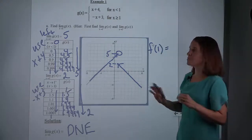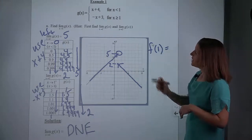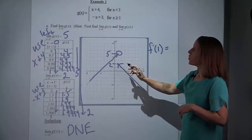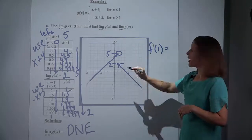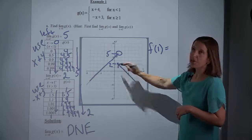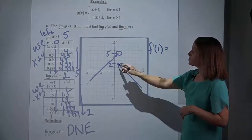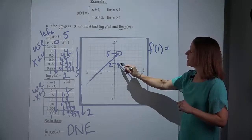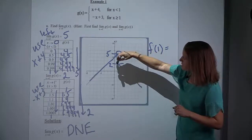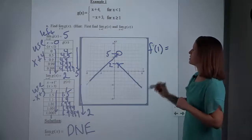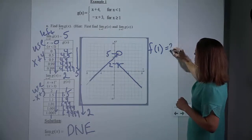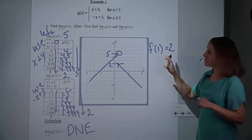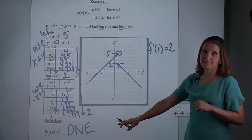We had an open circle here and a closed circle there. So whenever you had a choice, you have to go with the filled-in circle. So if you're asked for a function value, you're looking for the filled-in circle, if there is one. Going right down on that point, our answer is 2. So the function value existed and was 2, but the limit did not exist.